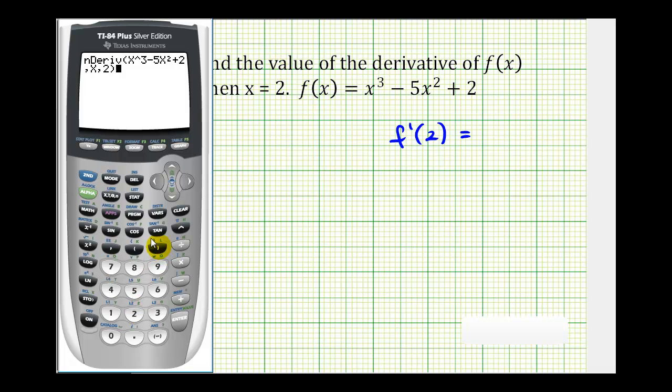Close parenthesis and press enter. A common error is to forget to put this comma x in the command. The next thing is, notice how it's giving us negative 7.999 and so on. The calculator is not perfect, we need to recognize this as negative 8. So let's go ahead and write this down, and then I'll show you a second way to find the same value.